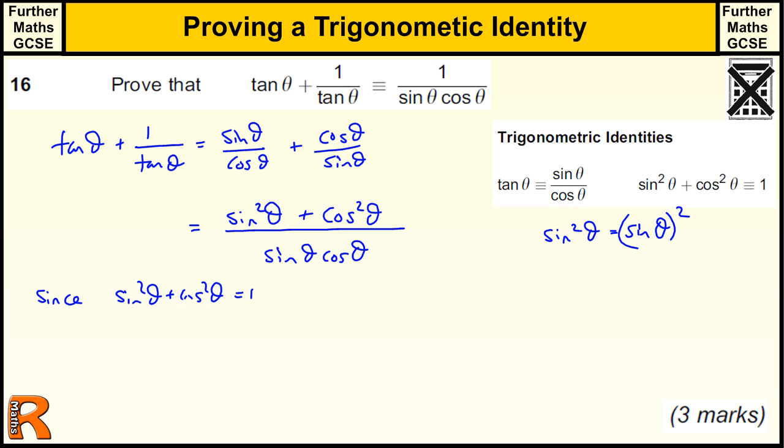So we're stating the rule we're using. That's always helpful if we're trying to prove something. This is equal to 1 over sin θ cos θ. And there we go, three marks.